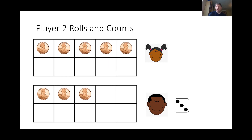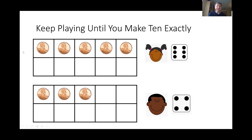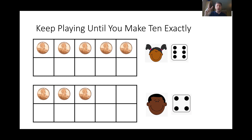The girl's turn again. She rolls the dice. This time she got a six. Can six fit on her 10 frame? She only has space for five, and six is more than five. So she cannot add six onto her 10 frame. Her turn is done. In future turns, she needs something five or less to continue playing — five, four, three, two, or one to add more pennies to her 10 frame.